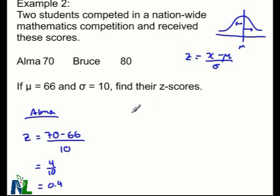Looking at Bruce, his score is 80, so that's the data point I'm interested in. I subtract the mean, which is 66, and divide by the standard deviation of 10. That gives 14/10, so Bruce has a z-score of 1.4.